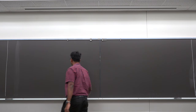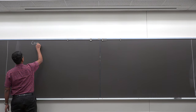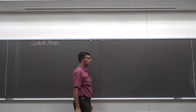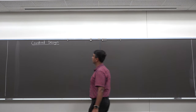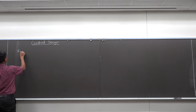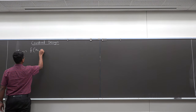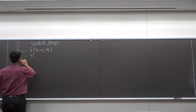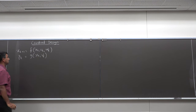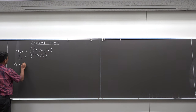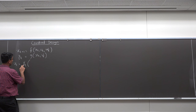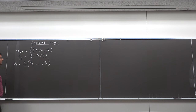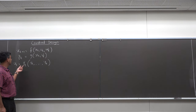Today the goal for discussion is to understand control design. In the previous class we talked about a state space model: we have a state equation x_{t+1} = f(x_t, u_t, w_t), and an observation y_t = g(x_t, v_t). My control action u_t is a function gamma_t of y_1 all the way up to y_t — I look at the entire history of observations and then decide what my control action is.